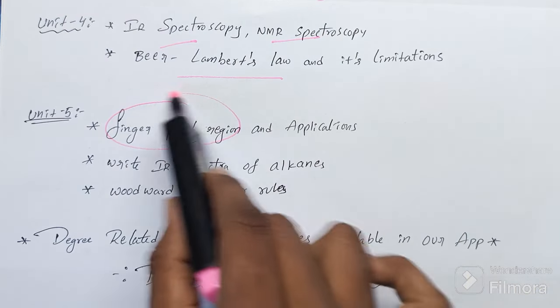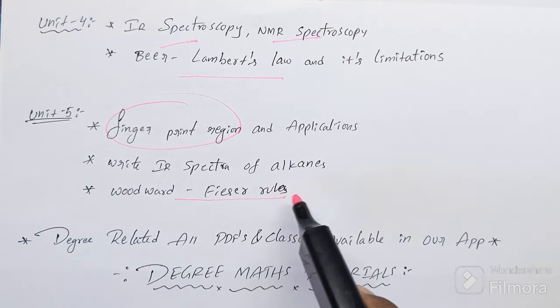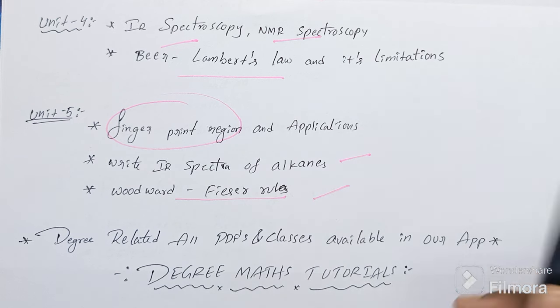Unit 5: fingerprint region, Woodward-Fieser rules, IR spectroscopy. These three are important.